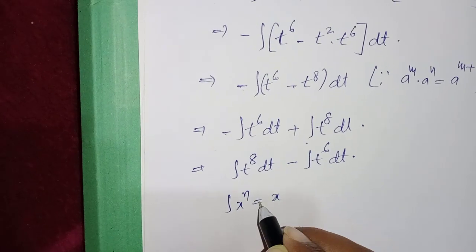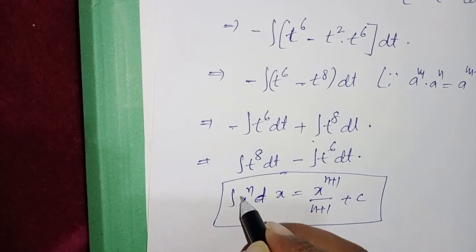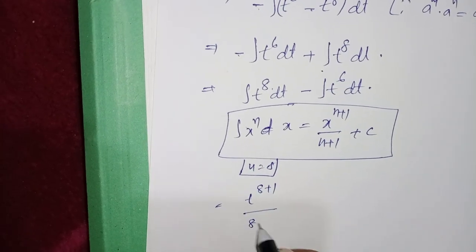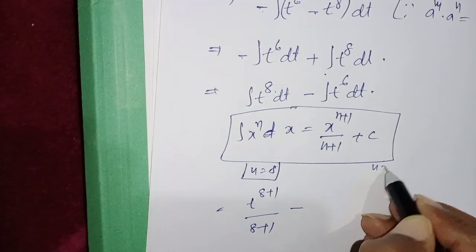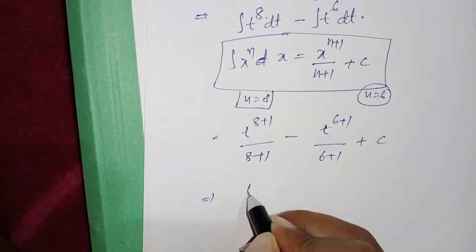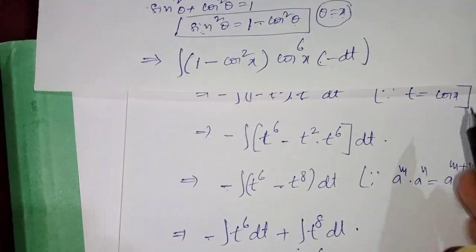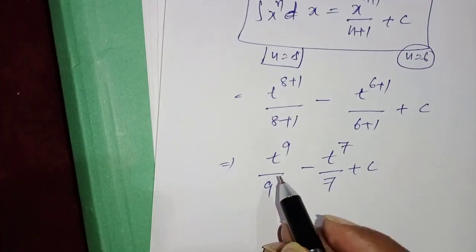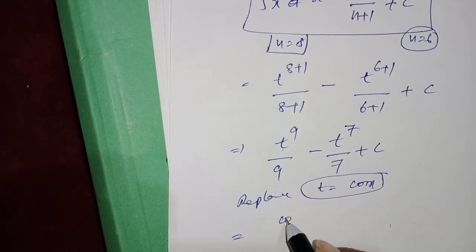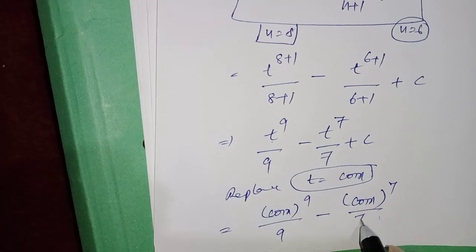Applying the power rule: for t⁸, n = 8, giving t⁹/9; for t⁶, n = 6, giving t⁷/7. So the result is t⁹/9 − t⁷/7 + C. Back-substituting t = cos x gives the final answer: cos⁹x/9 − cos⁷x/7 + C.